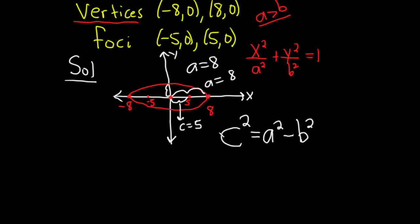So c is 5, so this will be 5² = a², which is 8², minus b², which we don't know. We need to find b².